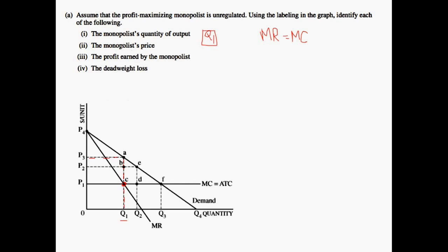Now let's move on to the monopolist price. We know that the monopolist has market power, and therefore will set the price above marginal cost. You look at where that quantity lies on the demand curve, drag across, and you find P3, which is going to be your answer.